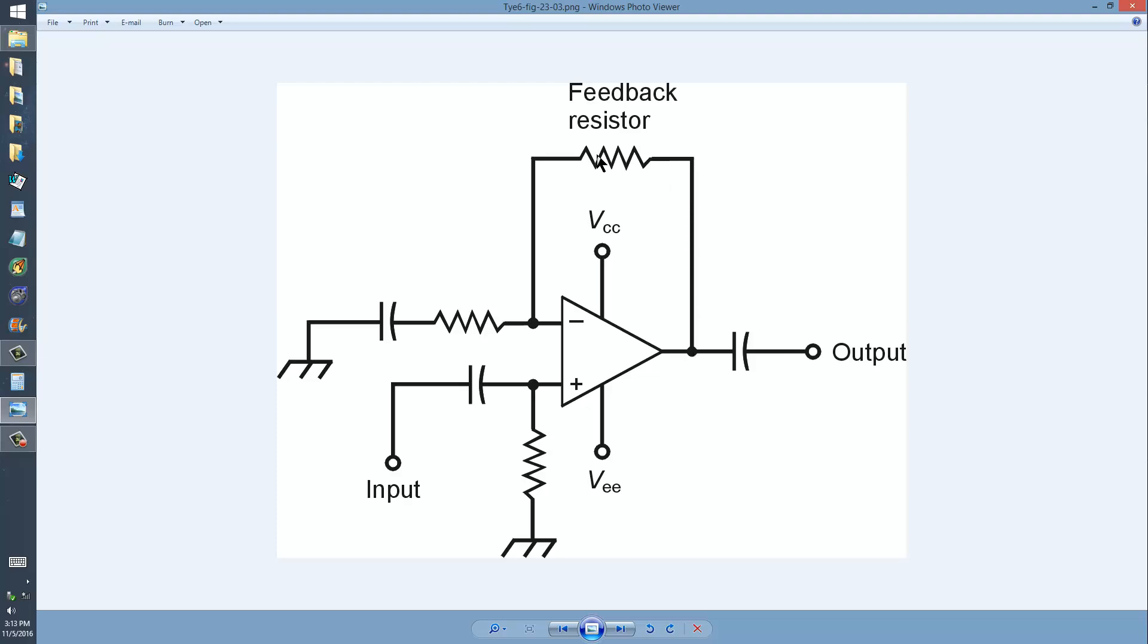But the feedback resistor is the key component of this type of circuit when you want to use it as an amplifier. You can make a potentiometer out of it or use a potentiometer in its place and vary the gain. It would be like a volume control then. But it would be sort of the opposite of what you normally expect for a volume control. It's reducing the extent to which the amplifier is hindered rather than increasing the extent to which the amplifier amplifies.